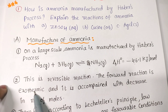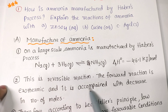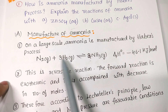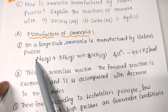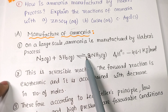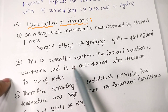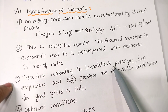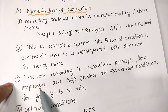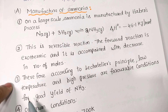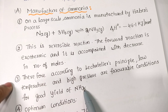The forward reaction is exothermic and it is accompanied with a decrease in number of moles. On the reactant side: 1 + 3 = 4 moles. On the product side: only 2 moles. So moles decrease from 4 to 2. According to Le Chatelier's Principle, low temperature and high pressure are favorable conditions for good yield of ammonia.